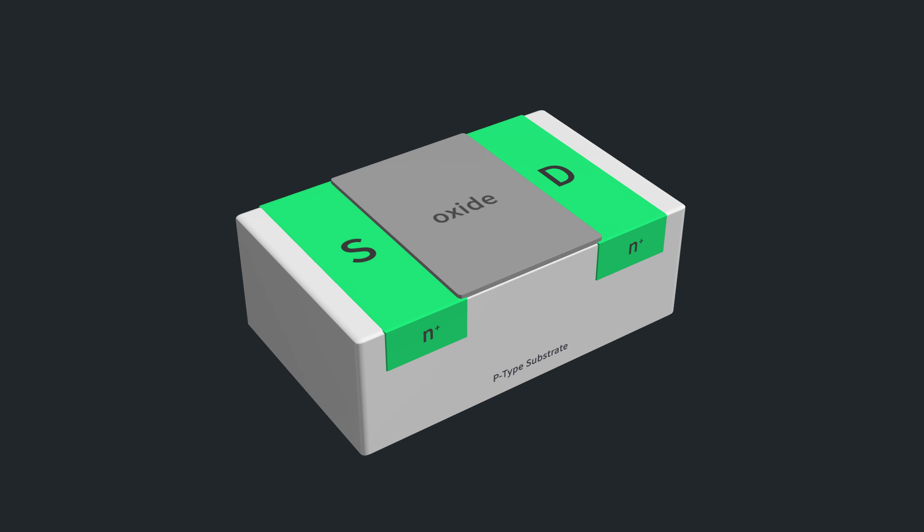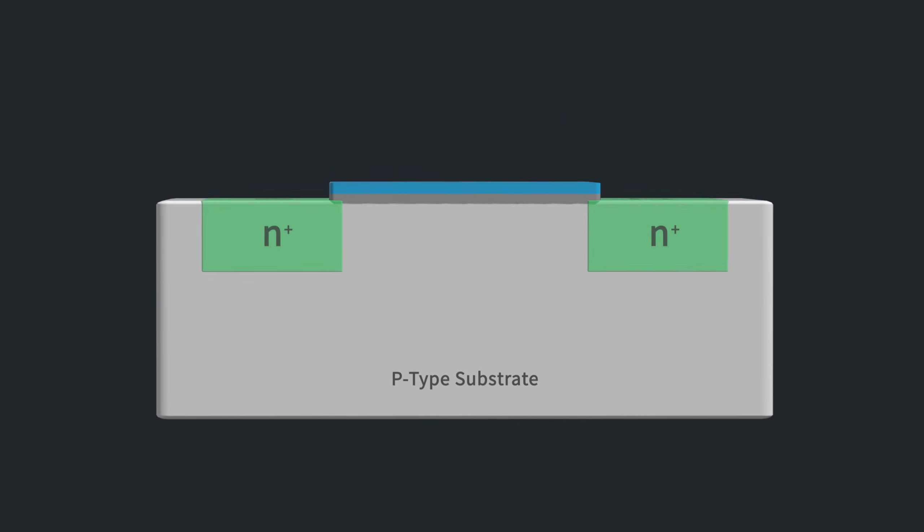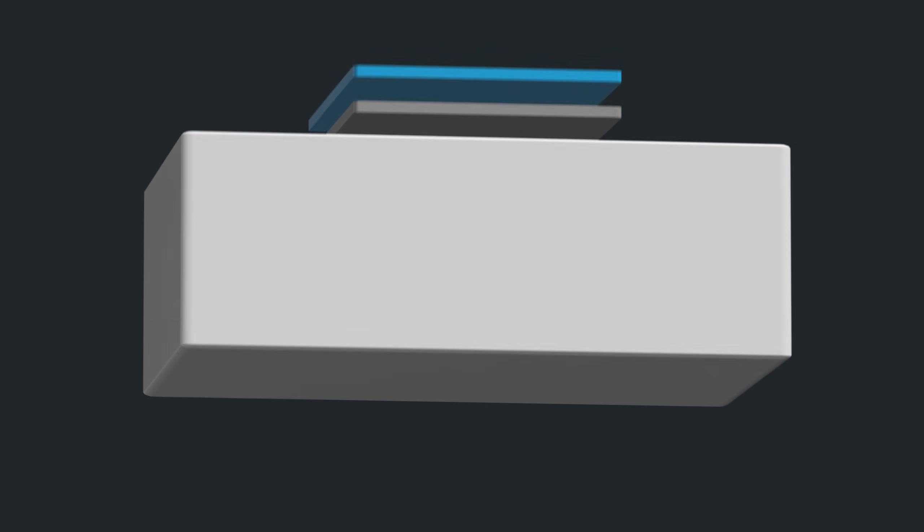On top of the substrate, an oxide which acts as an insulator is deposited. Then on top of that, a layer of metal is deposited, which finalizes the gate structure. Now you can see where the metal oxide semiconductor in MOSFET comes from.